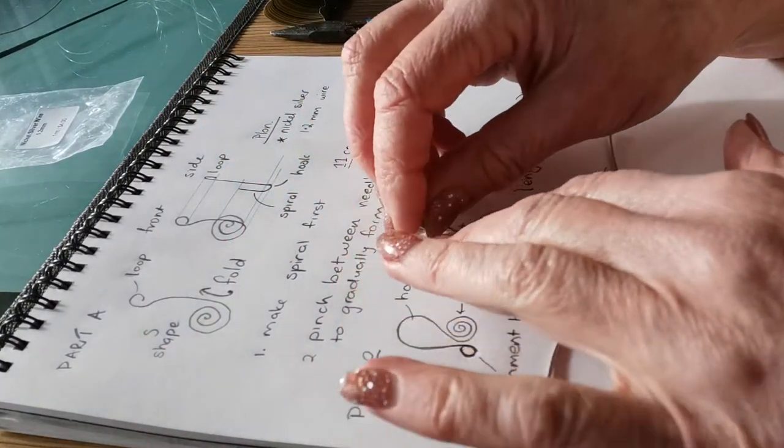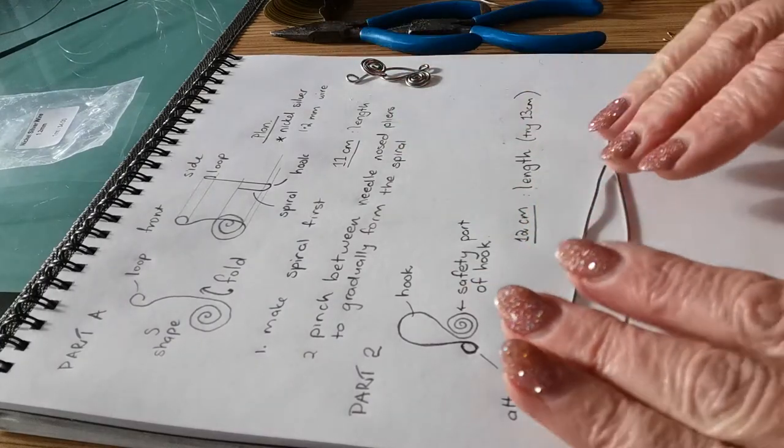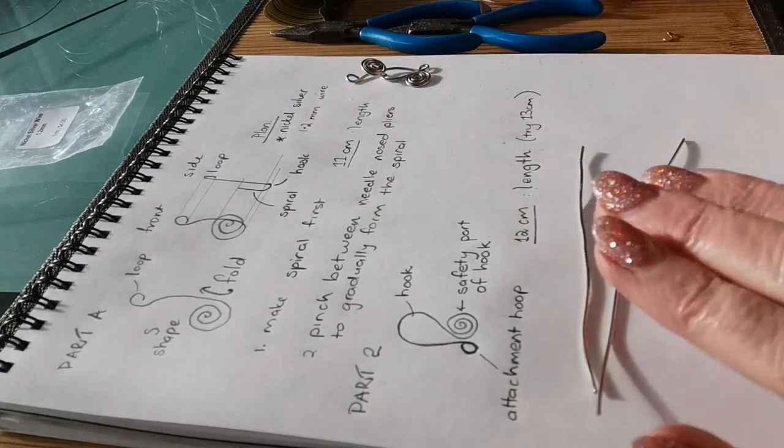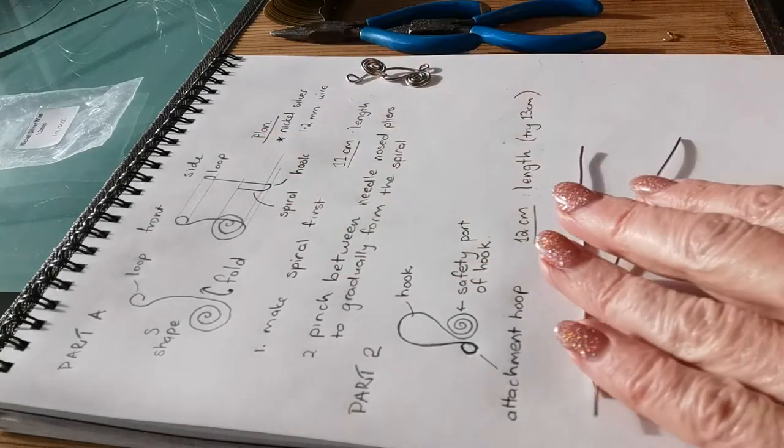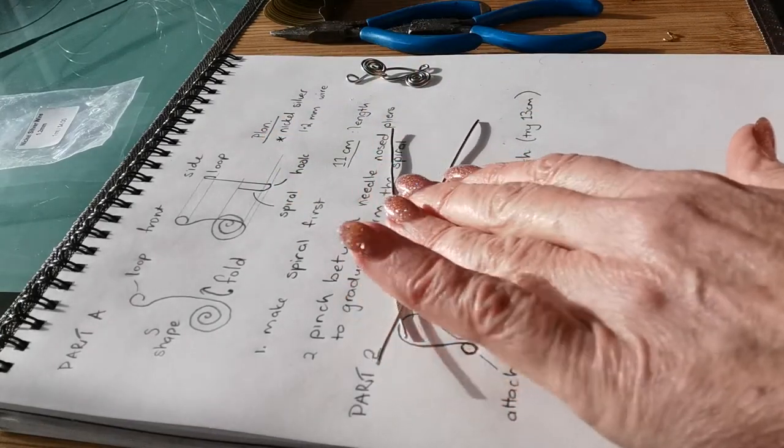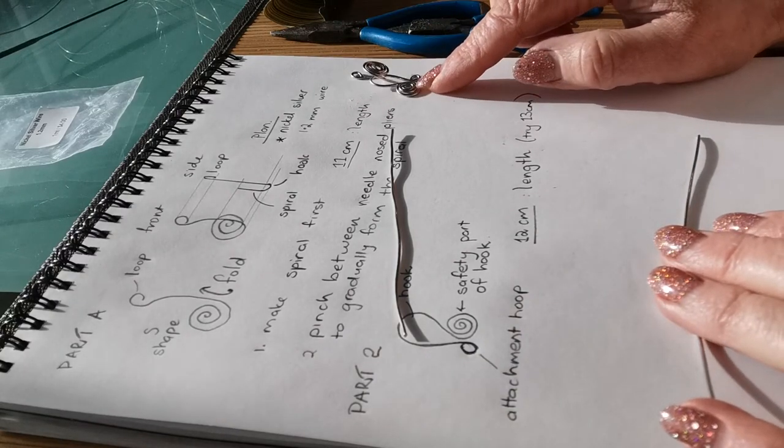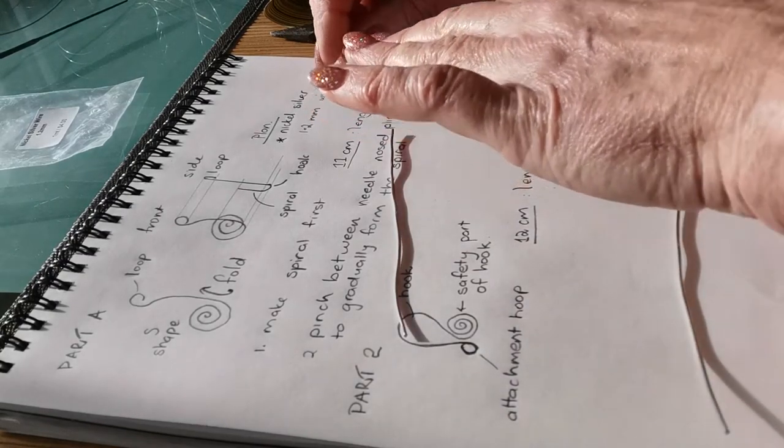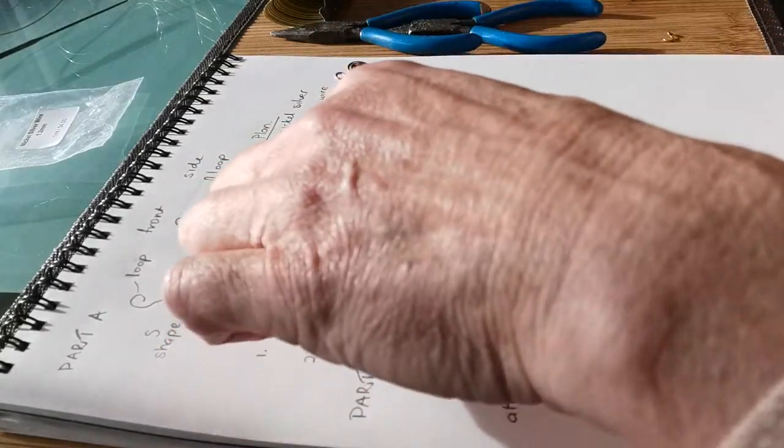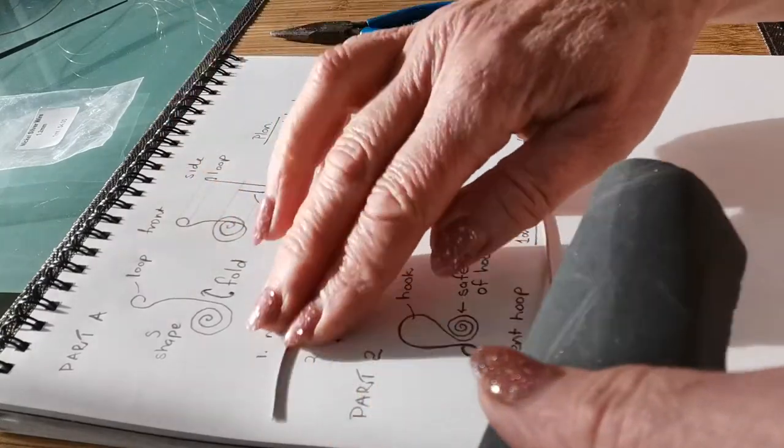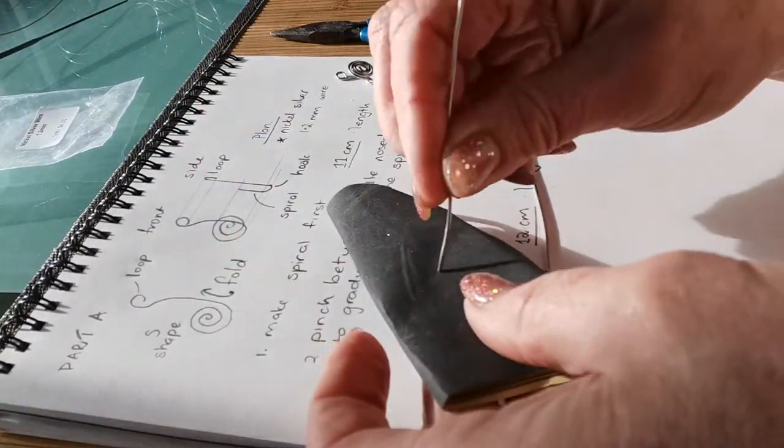I've decided to use nickel silver wire here which is 1.2 millimeters. I've experimented with 11 centimeters for the first part and I used 12 centimeters for the second part of the hook. I've pre-cut these.